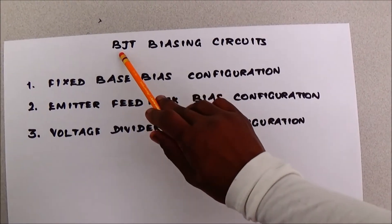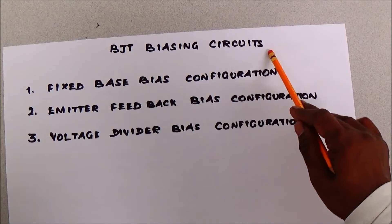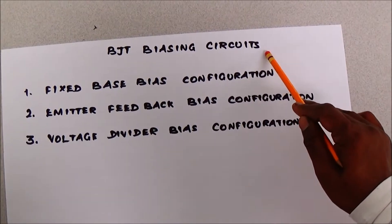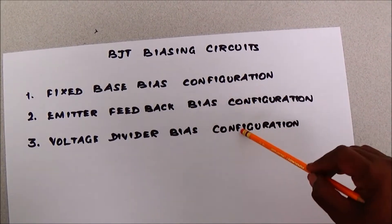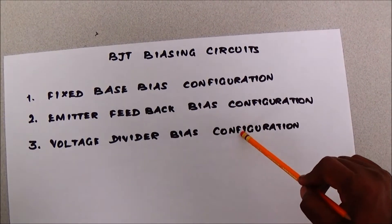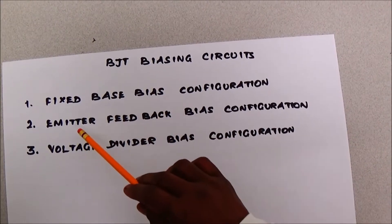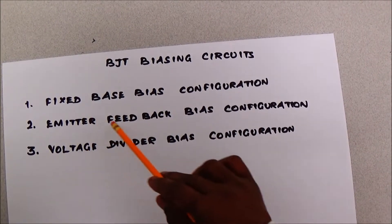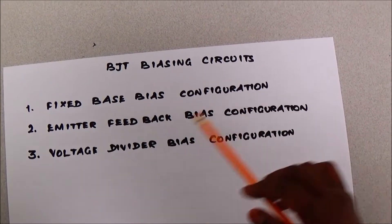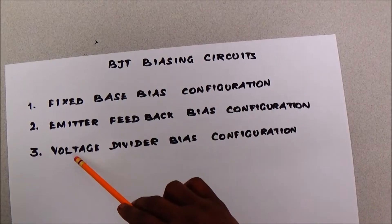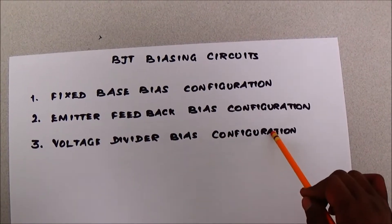We are going to do BJT biasing circuits today. We have three different configurations: fixed base bias configuration, emitter feedback bias configuration, and voltage divider bias configuration.